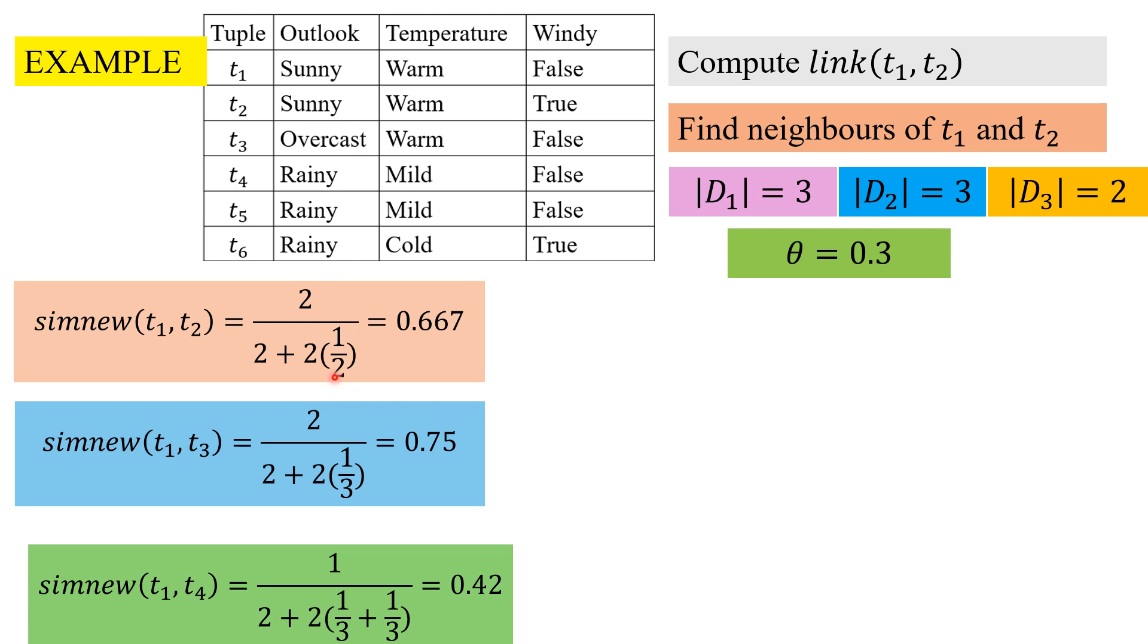For t1, t2, we have two common values: sunny and warm. Only in the windy attribute they differ. Here k was running to the differing attribute, so we have only one differing attribute.